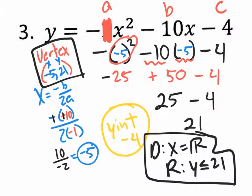How did I get rid of the 25? Well, negative 25 plus 50 is positive 25. It's like having only $25 but getting 50 — you'll have 25 left over. Then 25 take away 4 is 21. That's how we got the y value of the vertex.